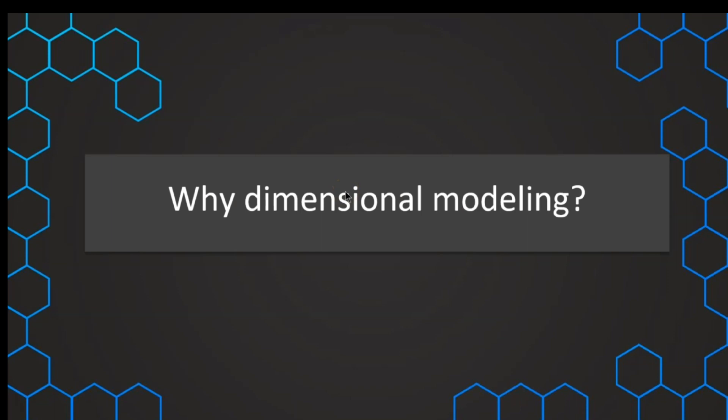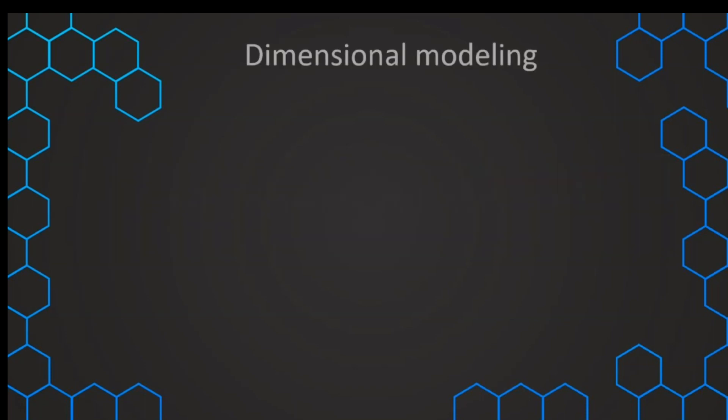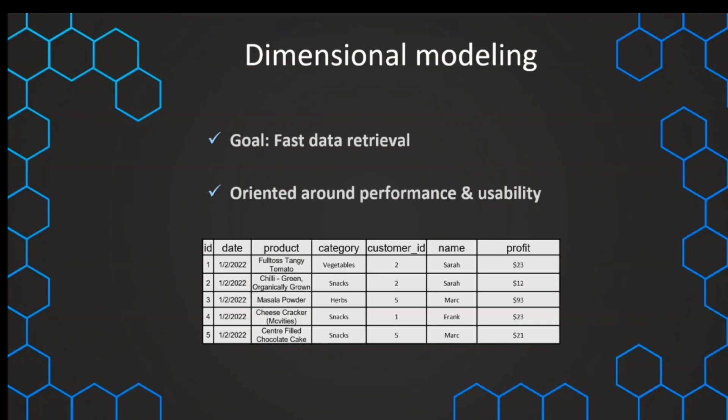Now that we've understood what a dimensional model is, in the basics at least, we want to understand why are there these benefits with dimensional modeling. We remember that the goal of dimensional modeling is fast data retrieval, and this is related to both performance and usability. And to understand why we have these benefits in terms of performance and usability, we want to have a look at the following example.